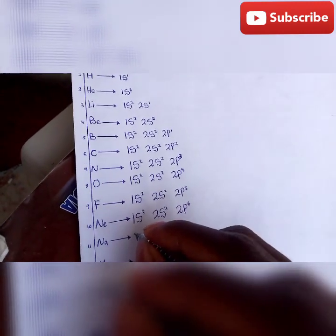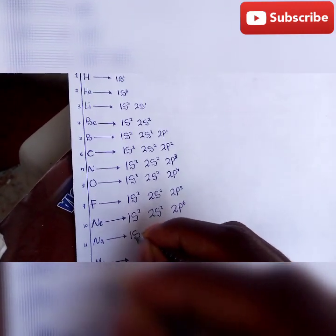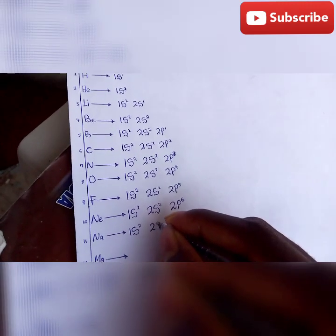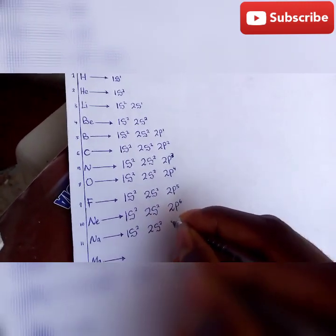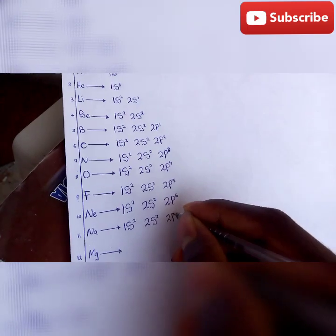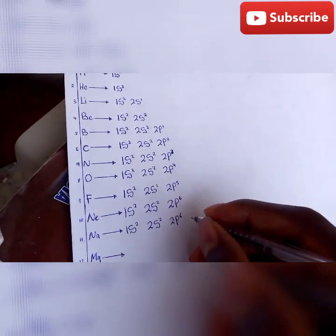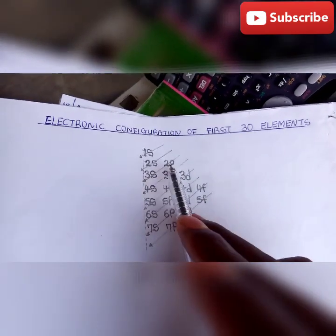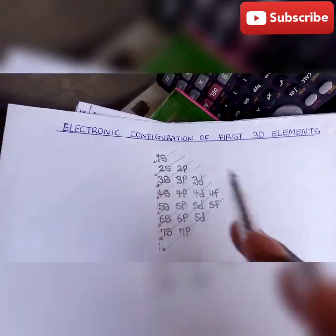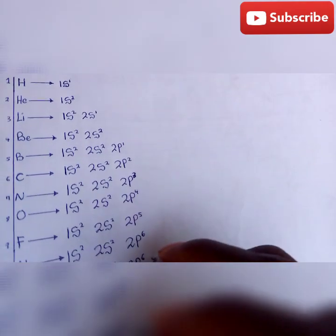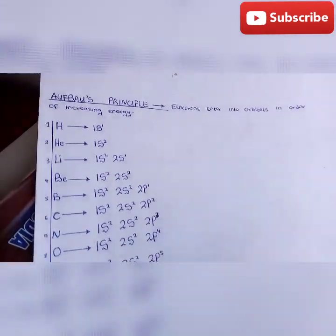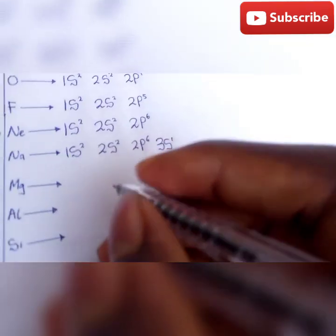Fluorine: 1s² 2s² 2p⁵. Neon: 1s² 2s² 2p⁶. So the p subshell can only accommodate six electrons, so this one is filled now. We are done with the p orbital. Remember, the p orbital is filled up, so the next one should be, from our principle here, after filling the second p orbital should be 3s.